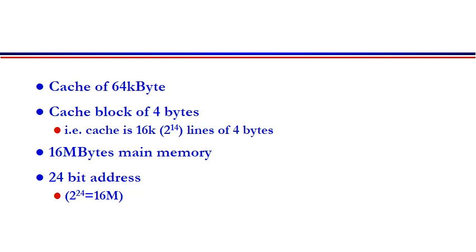By calculation, with S=22 and W=2: cache size is 2^16 = 64 kilobytes; main memory size is 2^24 = 16 megabytes; number of cache lines is 2^14; and number of main memory blocks is 2^22. These equations are used to find main memory length, cache memory size, number of blocks in main memory, and number of lines in cache memory.